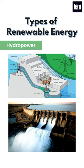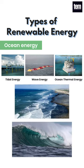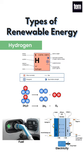Hydropower uses moving water to generate power. Ocean energy is energy derived from the sea — it generates thermal energy from the sun and produces mechanical energy from the tides and waves of the ocean. Hydrogen, when separated from another element, can be used for both fuel and electricity.